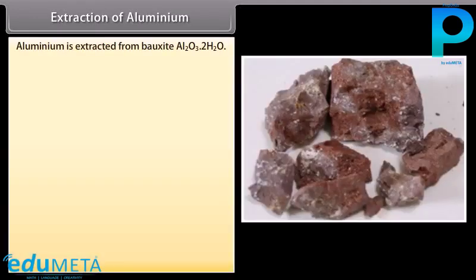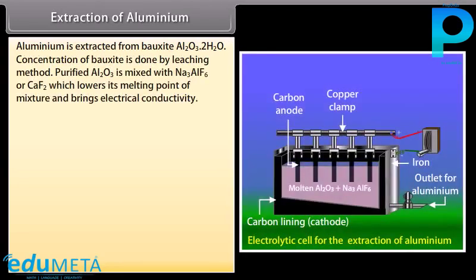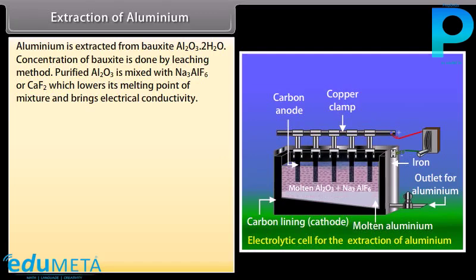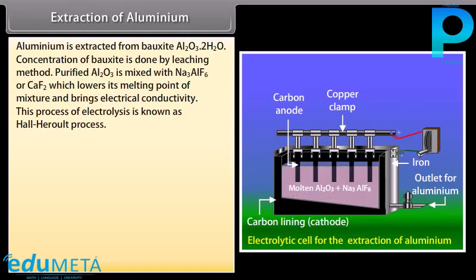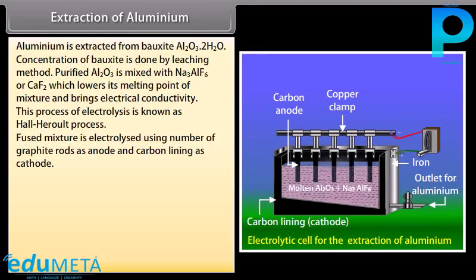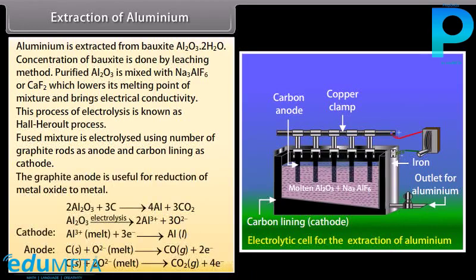Extraction of Aluminium: Aluminium is extracted from bauxite (Al₂O₃·2H₂O). Concentration of bauxite is done by the leaching method. Purified Al₂O₃ is mixed with Na₃AlF₆ or CaF₂, which lowers the melting point of the mixture and increases electrical conductivity. This process of electrolysis is known as the Hall-Héroult process. The fused mixture is electrolysed using graphite rods as anode and carbon lining as cathode. The graphite anode facilitates reduction of metal oxide to metal.